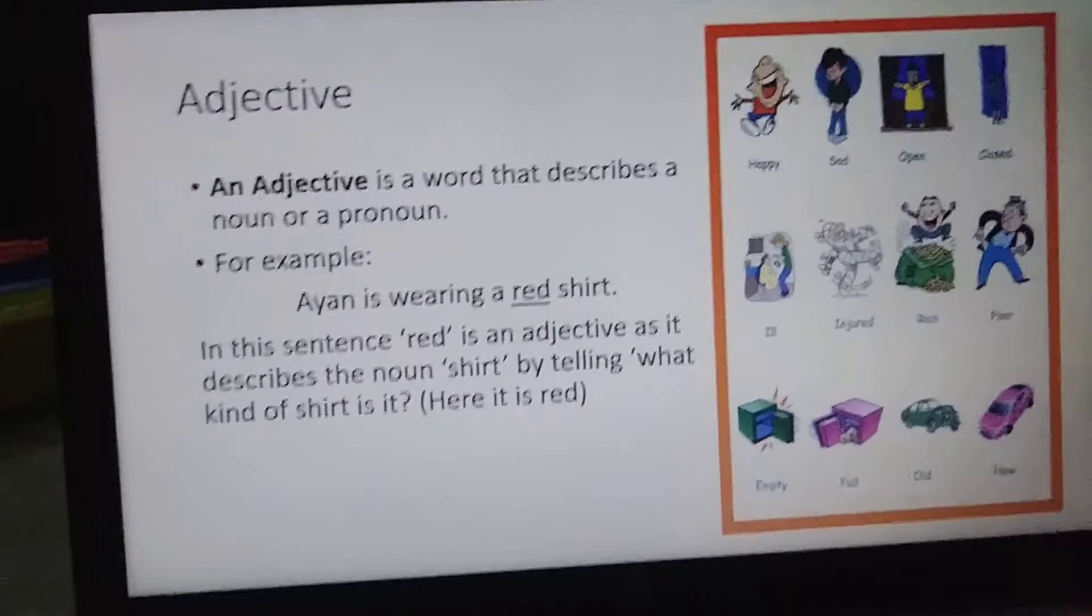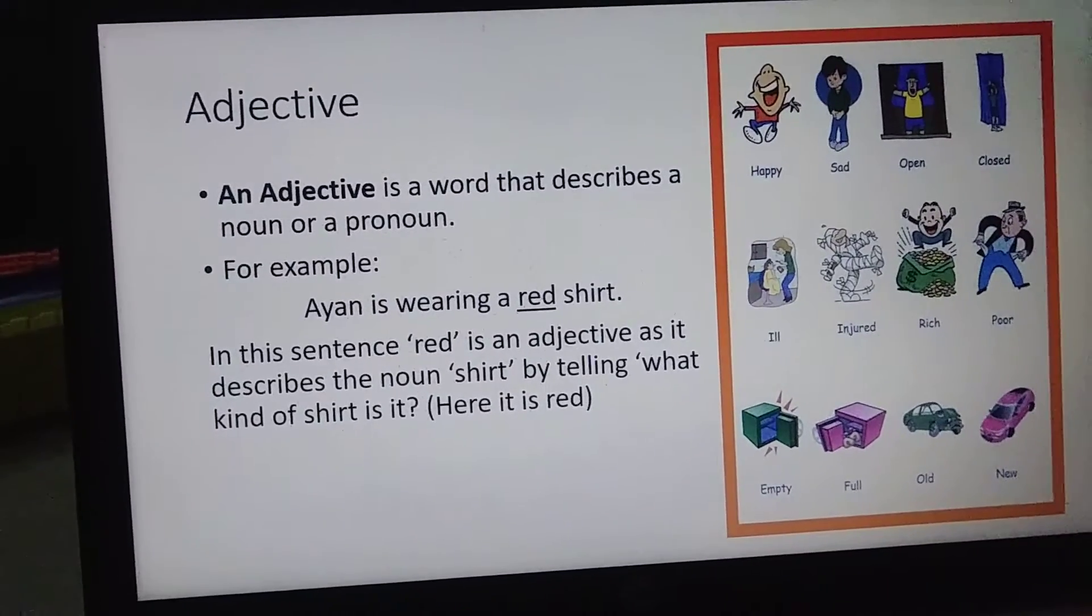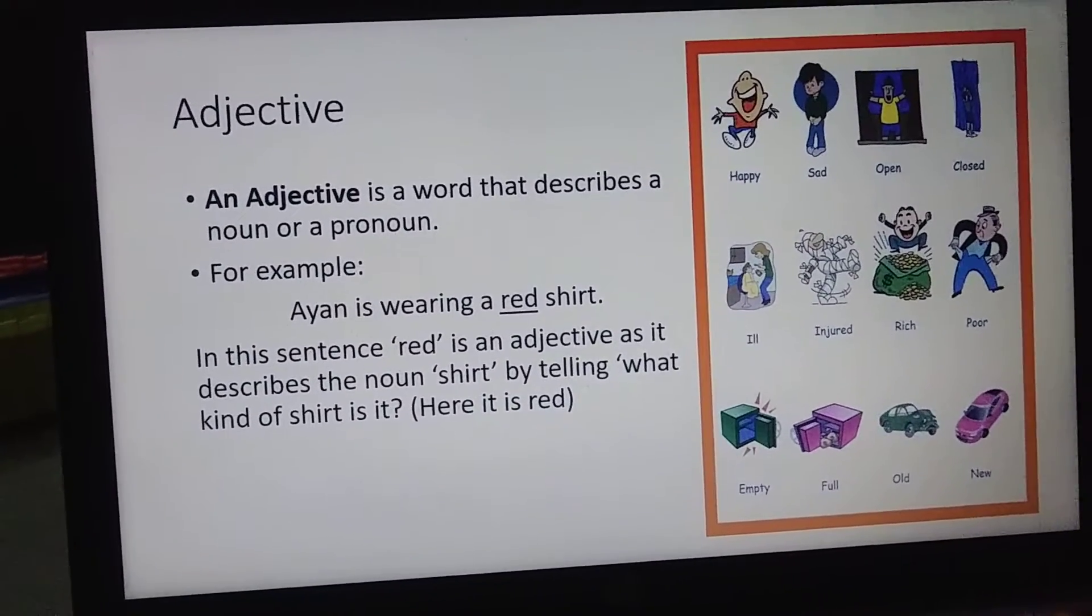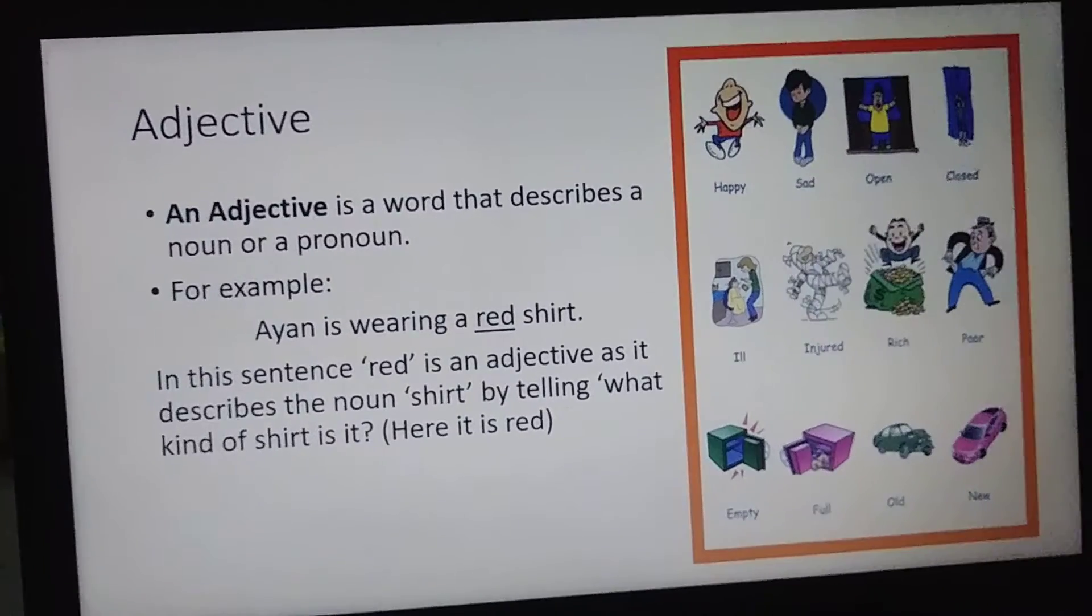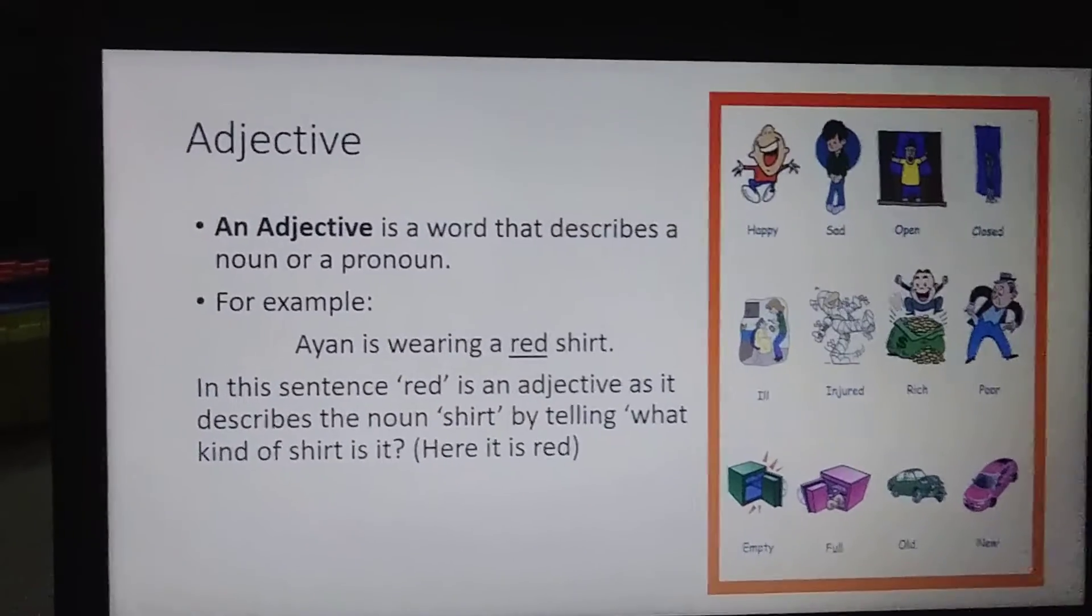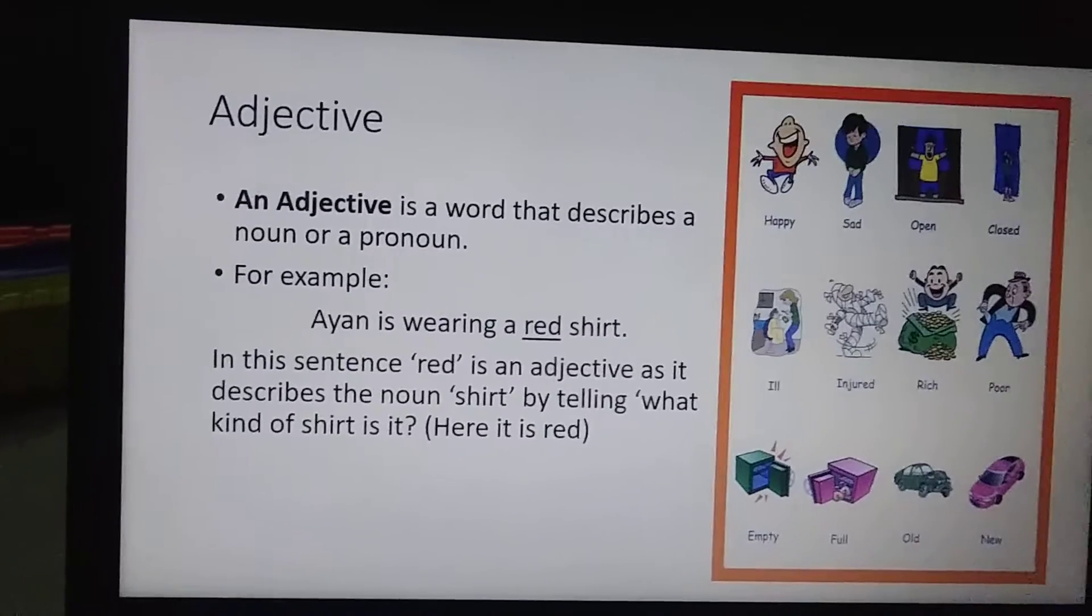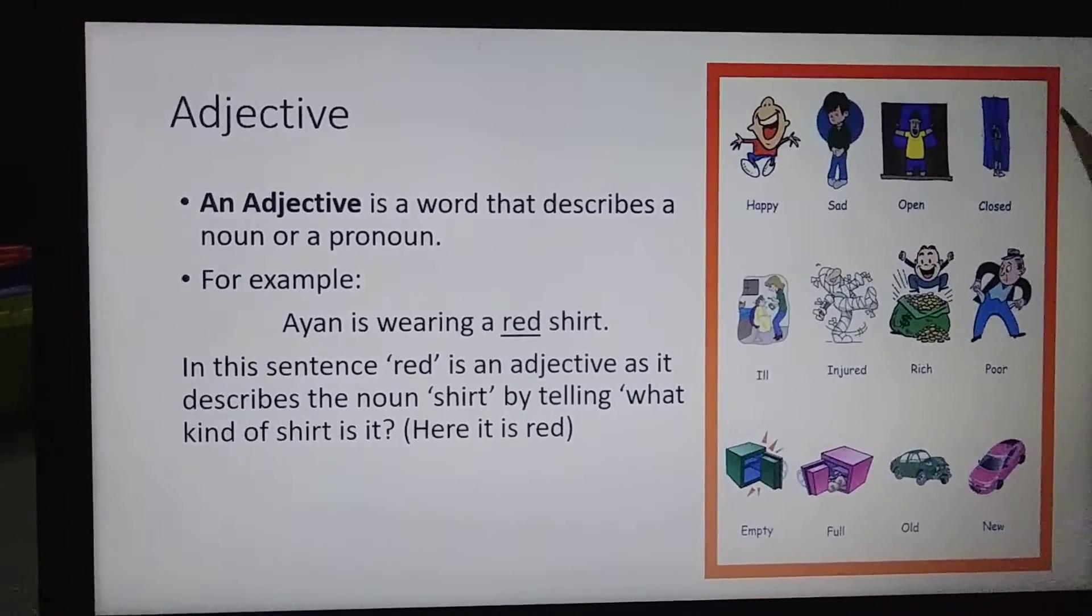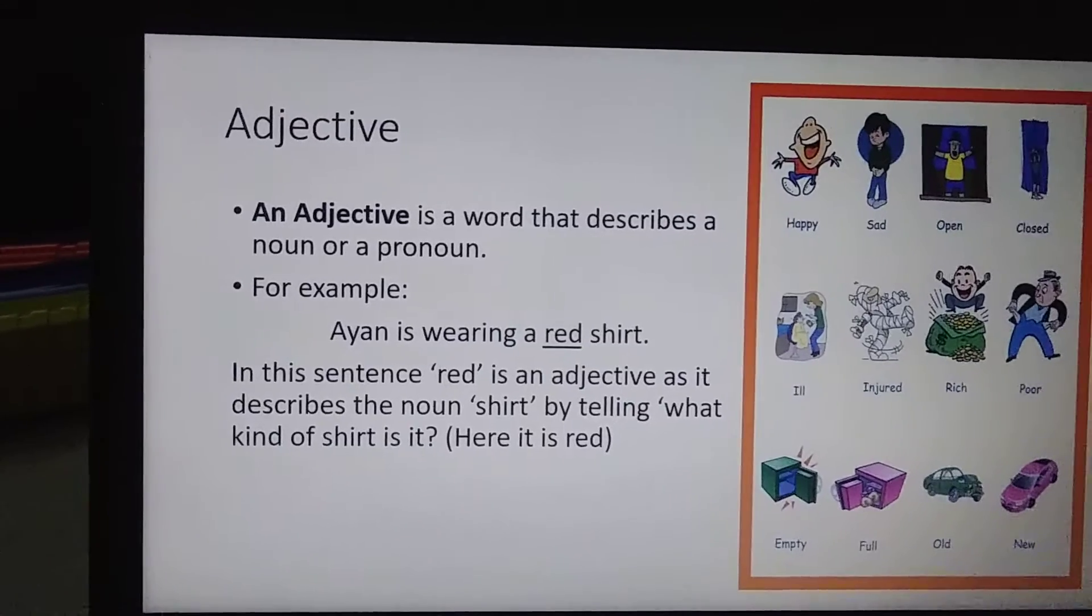The next thing is adjective. With the name of this adjective, this means that we are going to add something in some sentence. An adjective is a word that describes a noun or pronoun. Describing means that we are going to add something. For example, Ayan is wearing a red shirt. Well, the shirt is there but what type of shirt? A red shirt. Now look at the picture over here - I have given these so many words and all these words are adjectives. We are adding adjectives, we are adding something to the sentences.